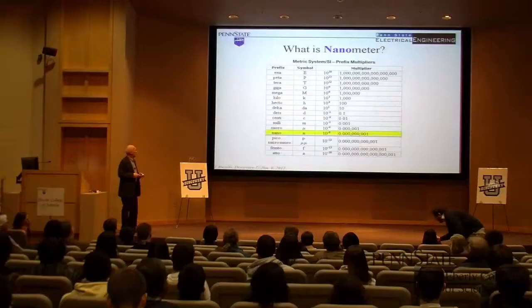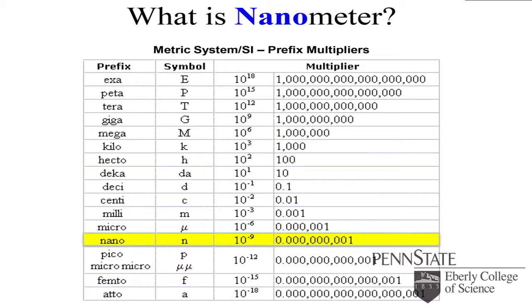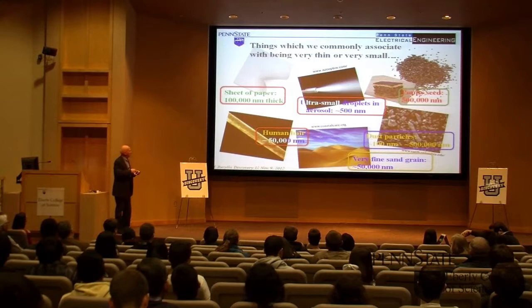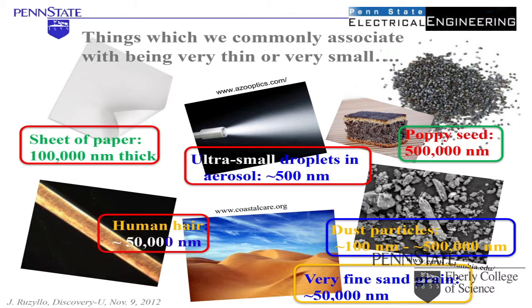First, I would like to remind you what nano stands for. Nano is a prefix and a multiplier in the metric system that basically follows centimeter, millimeter, micrometer — and this is 10 to the minus 9 meters, which is one billionth of a meter. How does it translate to the physical objects that we interact with? For instance, a very thin paper is 100,000 nanometers thick.